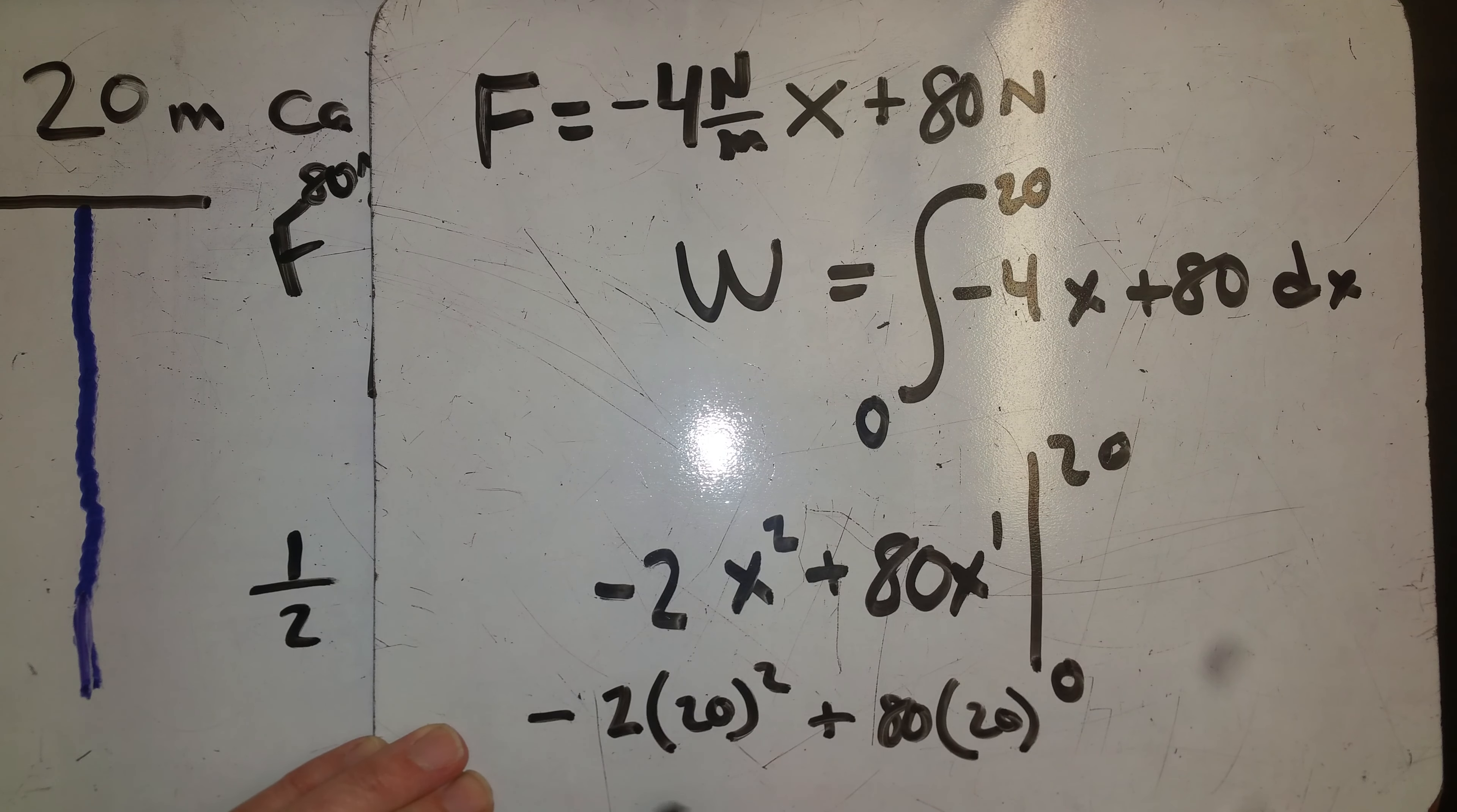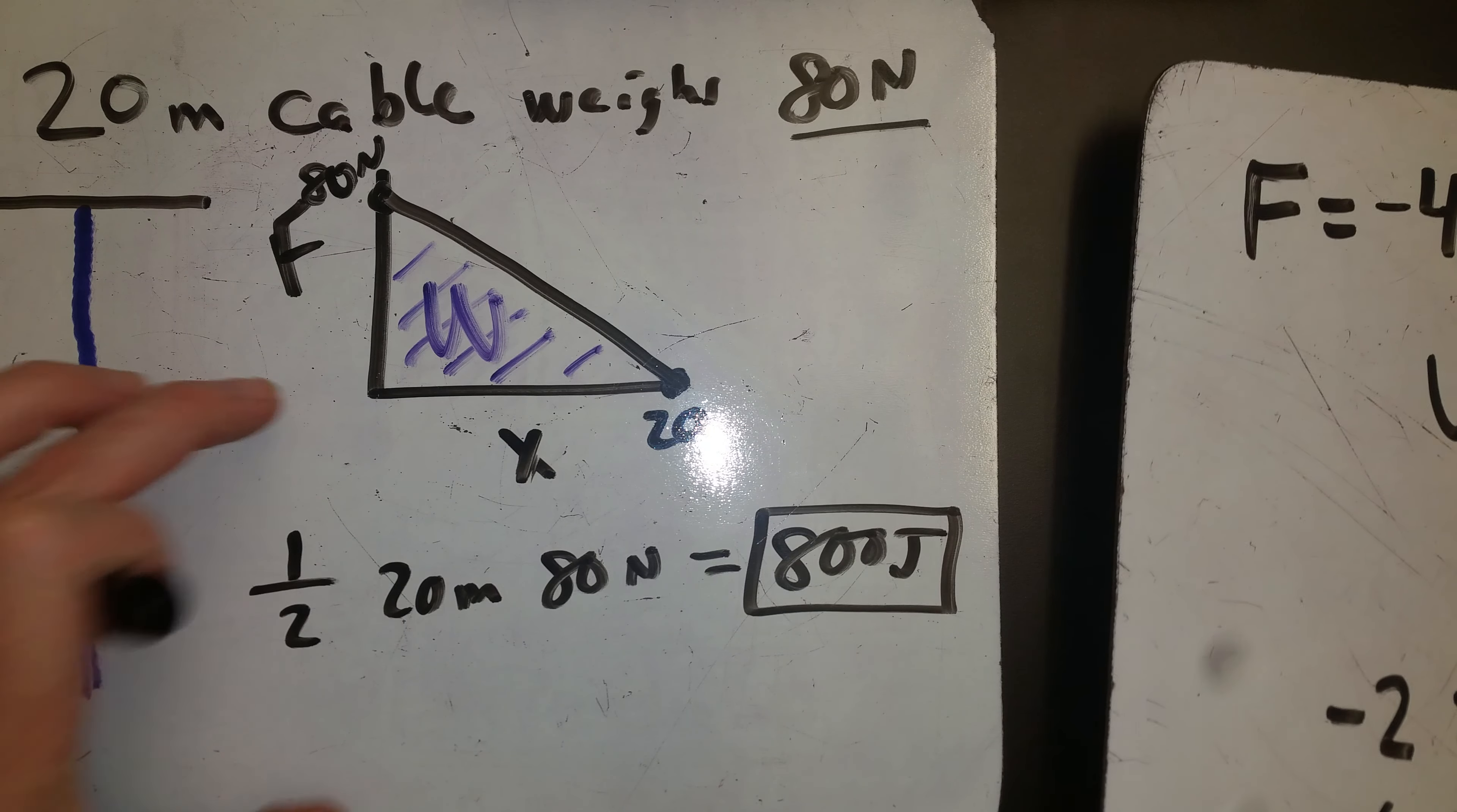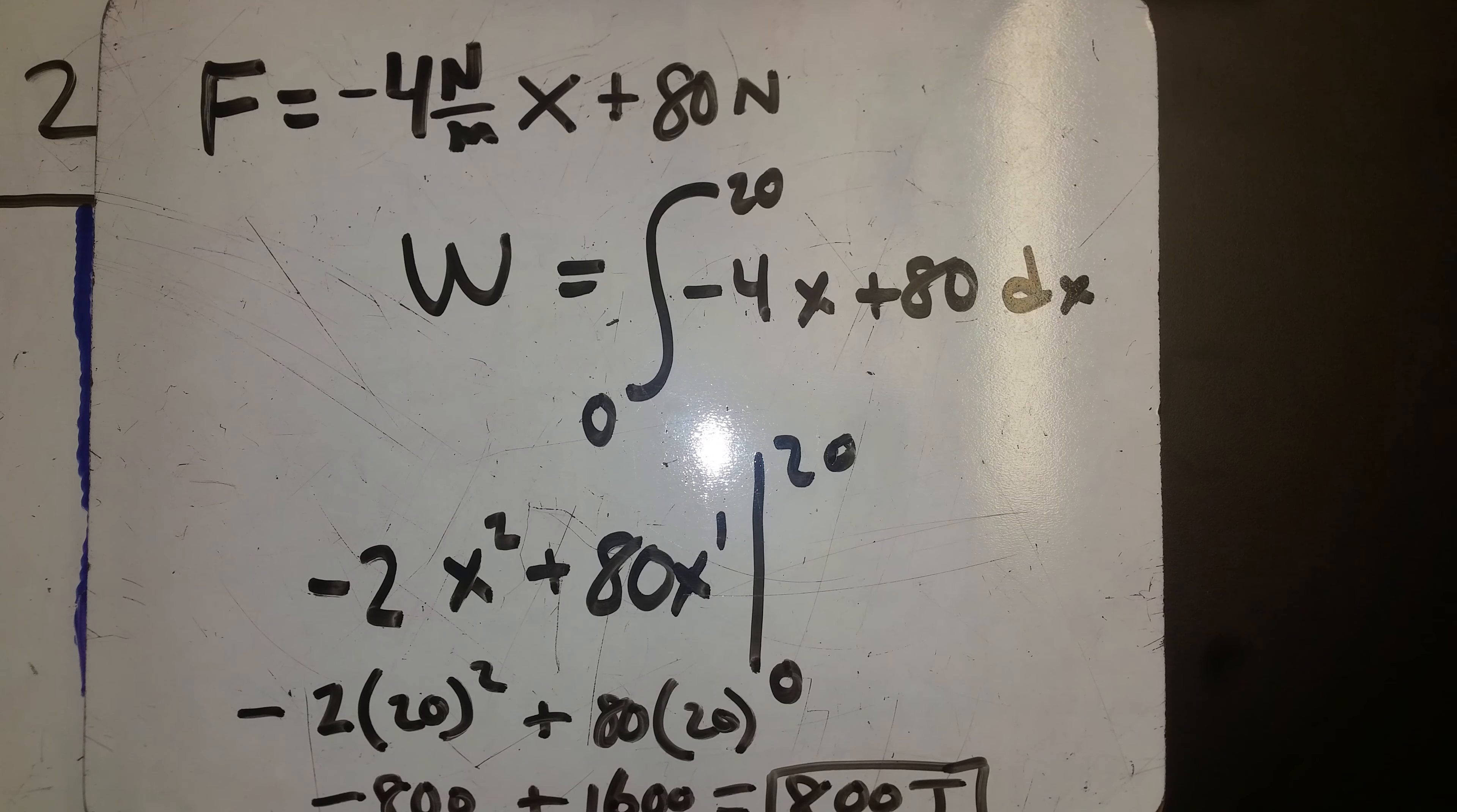Negative 2, 400 times 2 is negative 800 plus 1600 equals positive 800 joules is our area under the curve. Same answer we got over here, so basic geometry and algebra or calculus, either one will work for you, get the same answer.